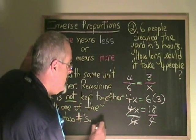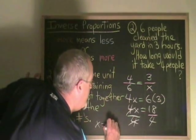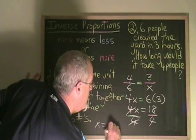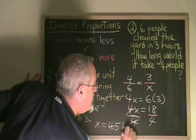The x is isolated and is equal to 18 divided by 4, which is 4.5. And the unit of measure is hours.